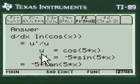And then u prime over u which turns out to be sine over cosine which is really tangent, so the answer is minus 5 times tangent of 5x. Pretty neat, huh?